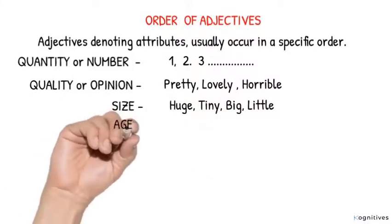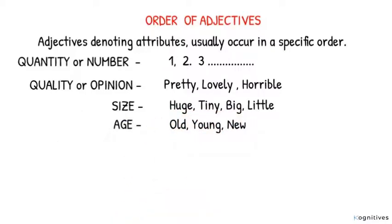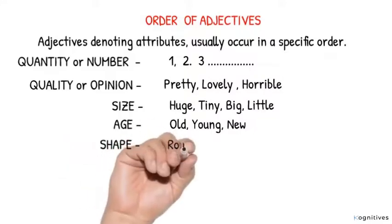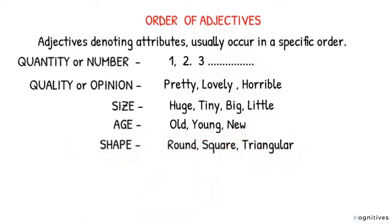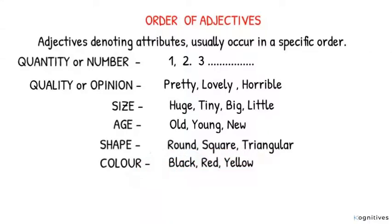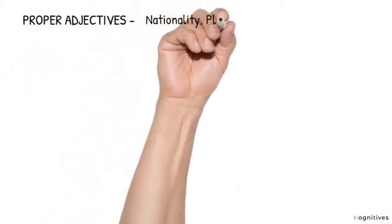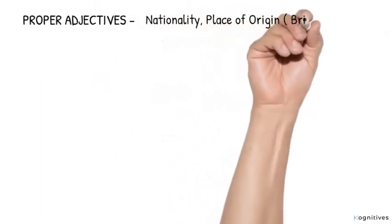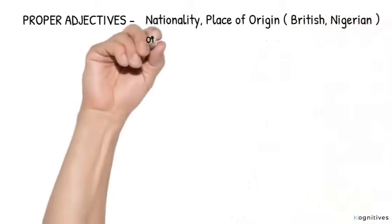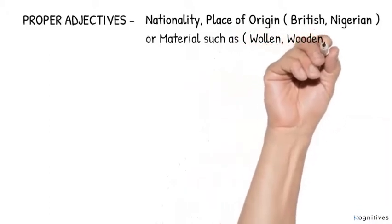Number four: Age, and this could be old, young, new. Number five: Shape, it could be round, square, triangular. Number six: Color, it could be black, red, yellow. Seven: Proper adjective, and this could be nationality, place of origin, that is British or Nigerian, or it could be material, such as woolen, wooden, silk.